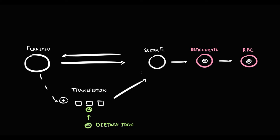In normal conditions, we have enough iron on the table and enough iron in the storage site. Because of this, we do not need many delivery boys in the form of transferrin. In normal conditions, for every three transferrin molecules we have one iron molecule.